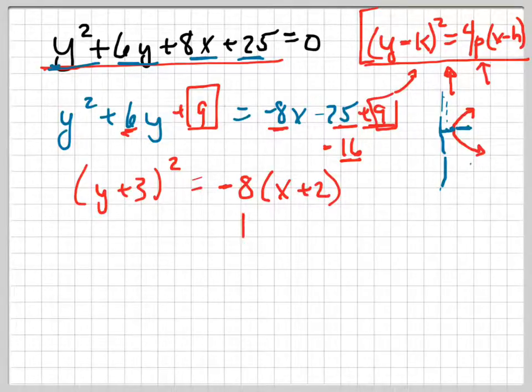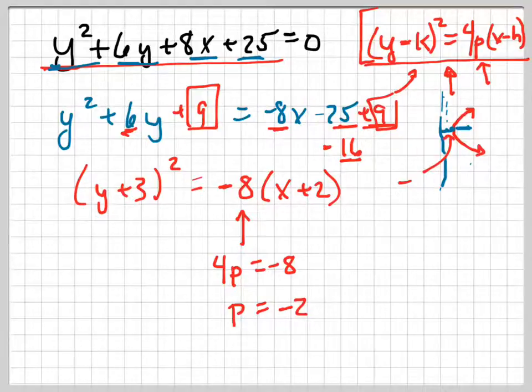Now, doing that tells me that 4p equals negative 8, which means p equals negative 2. So the distance right here is negative 2. So now I can find all of my information based upon that.